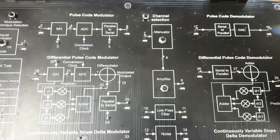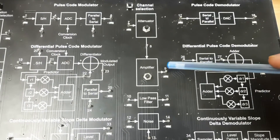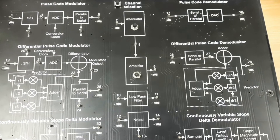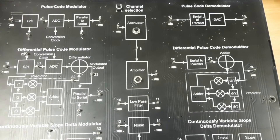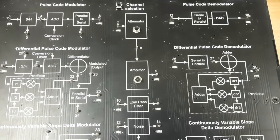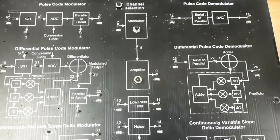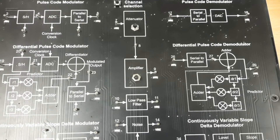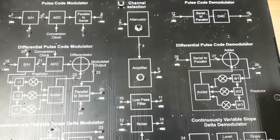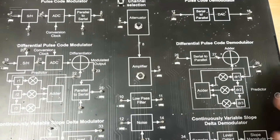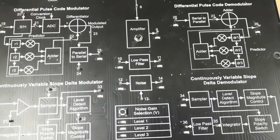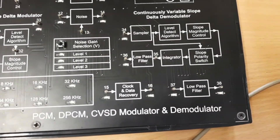In the demodulator section, whatever signal is received from the channel is directly applied to a serial-to-parallel converter. This converts the PCM pulses into parallel PCM codes. The output of the serial-to-parallel converter is then applied to a DAC, or digital-to-analog converter, which converts the parallel PCM codes into a multi-level signal. The output of the DAC is then passed through a low-pass filter.